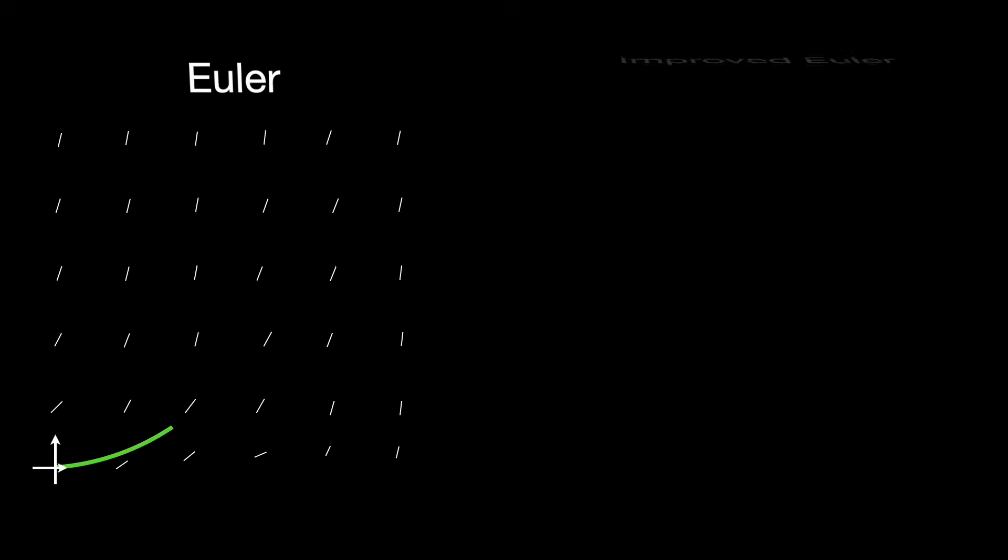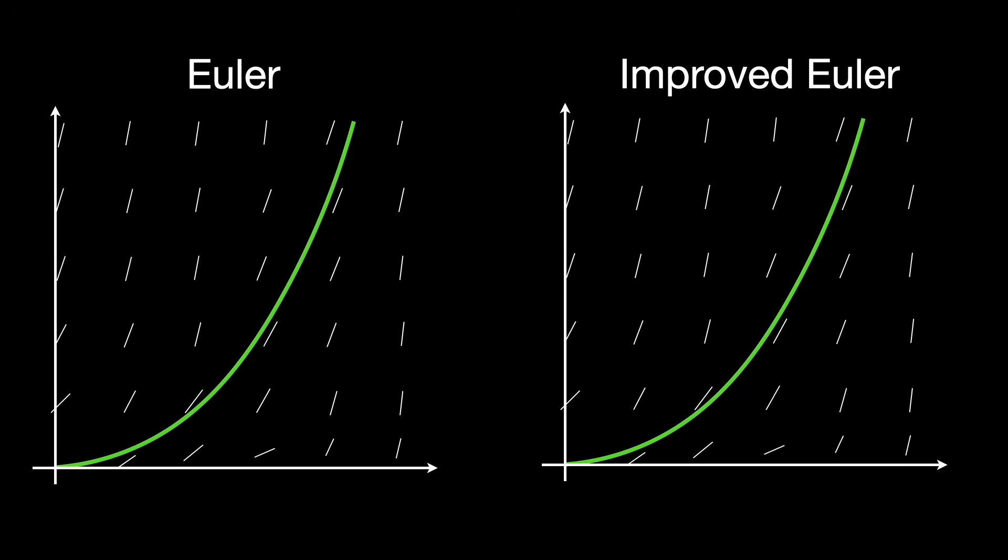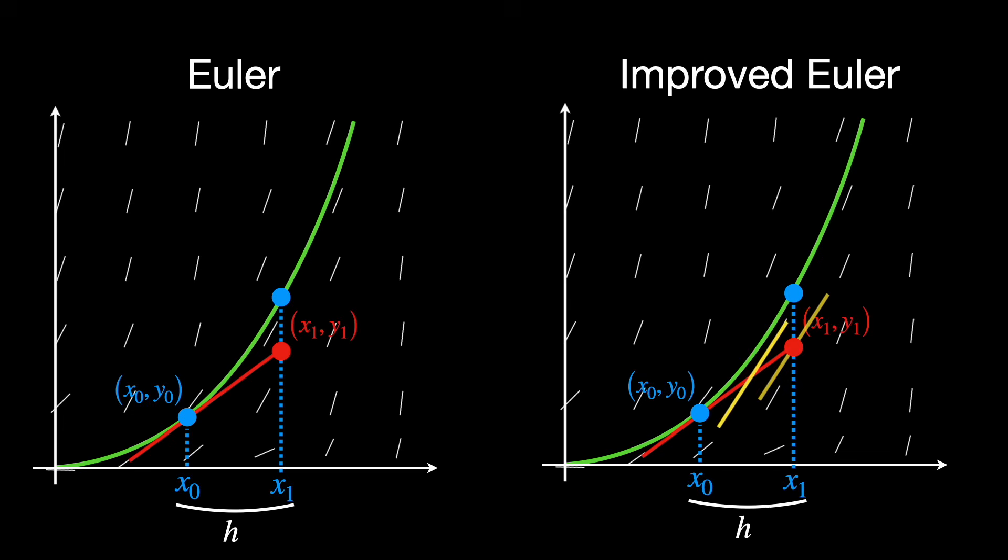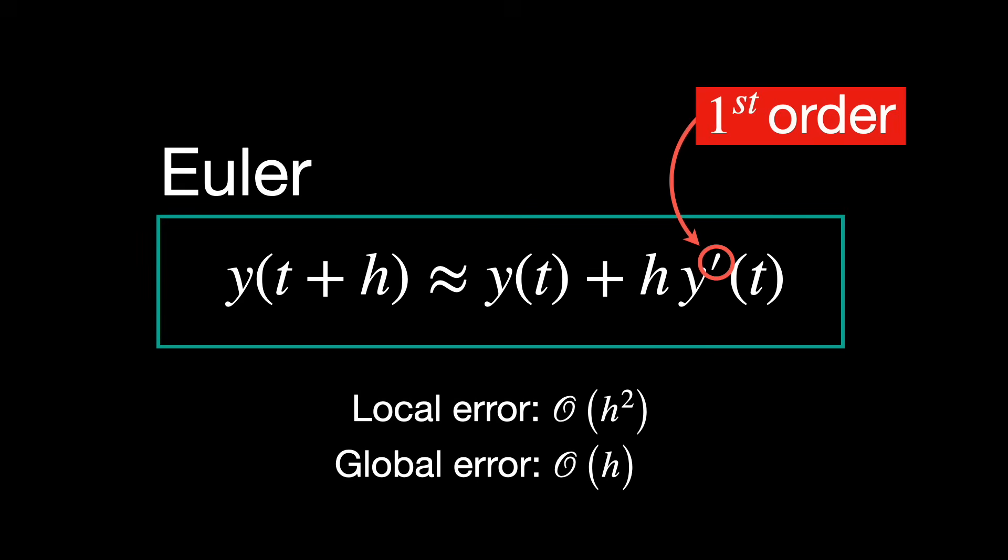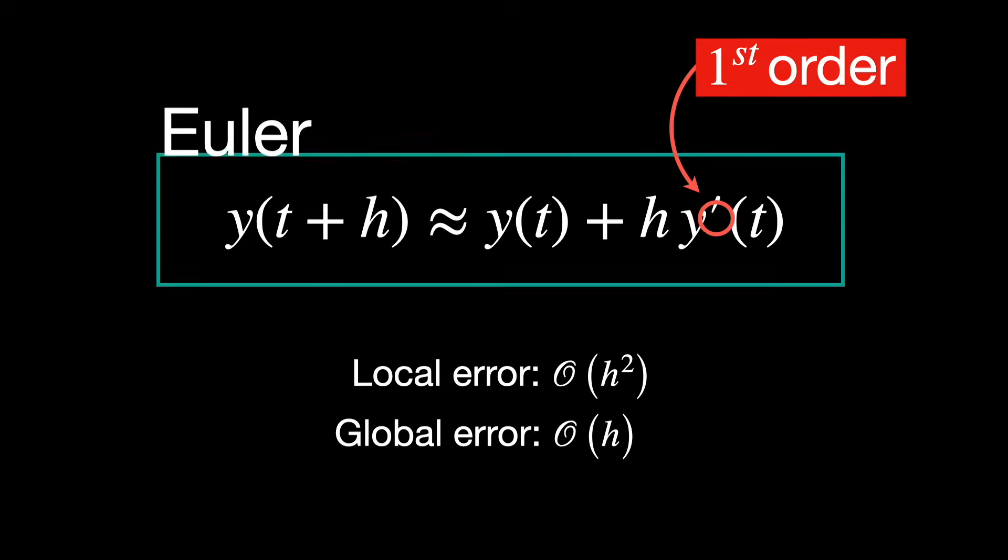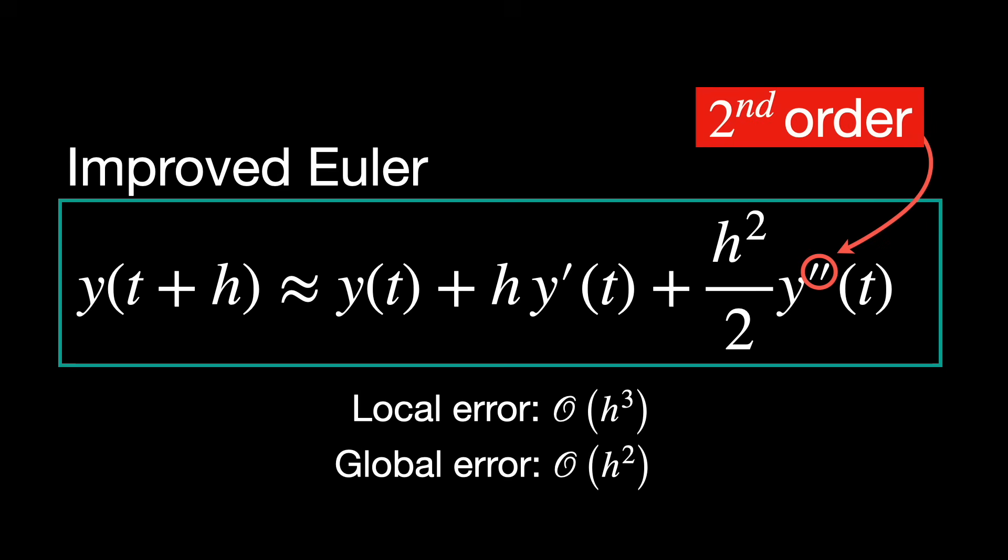So you can imagine how costly, from the computational point of view, it might be to have very small step sizes just to get a reasonable approximation. A more accurate method is the improved Euler method, which produces a better estimate by calculating the average slope at each interval. Instead of just using the slope at the beginning of the step, it also includes the slope at the estimated end and the average of the two. This produces a result that converges faster to the true solution. Both Euler and improved Euler can be understood as approximations to the Taylor series expansion of the true solution y. Euler's method corresponds to a first-order Taylor expansion, since it uses only the first derivative. Improved Euler goes a step further by better approximating the slope over the interval, making it second-order accurate and much closer to the actual trajectory.